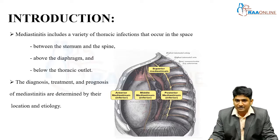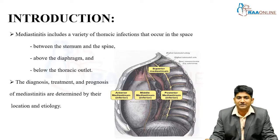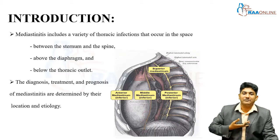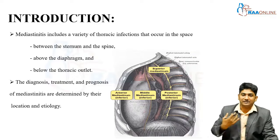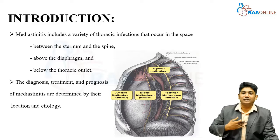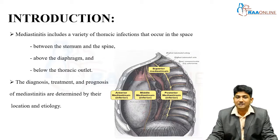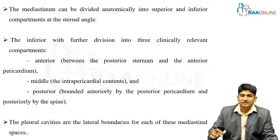Mediastinitis includes a variety of thoracic infections that occur in a confined space called the mediastinum. The boundaries of the mediastinum are: anteriorly the sternum, posteriorly the spine, above the diaphragm, and below the thoracic inlet. The diagnosis, treatment, and prognosis are all determined by the location and etiology of the infection.